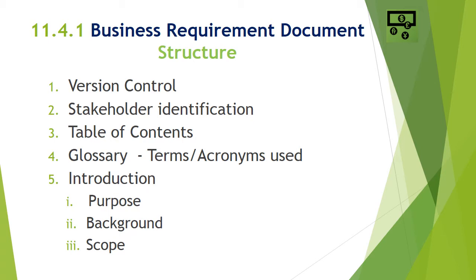At the top of the document structure is version control, where you show progress between different versions and any major changes made. After version control is stakeholder identification, where you identify different business, IT, and delivery stakeholders, including stakeholders who will provide sign-off. Next is the table of contents or index — remember to refresh it after every version update. The glossary section contains all terms or acronyms used in the document so that readers don't face difficulty with any acronym.